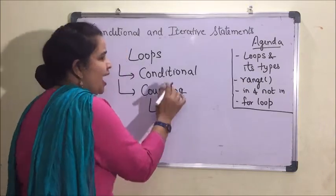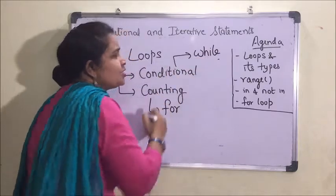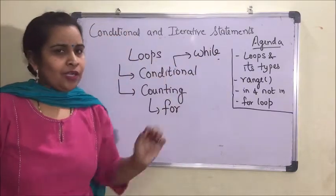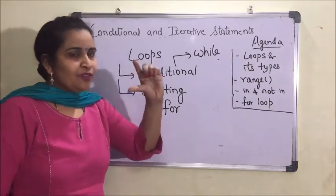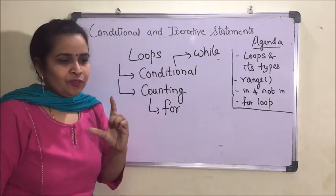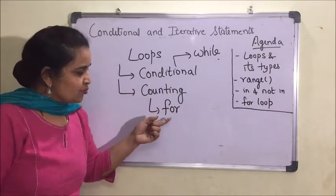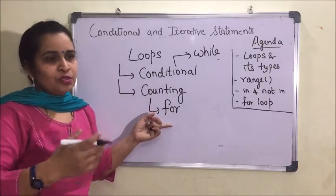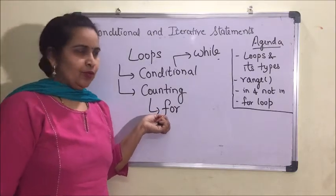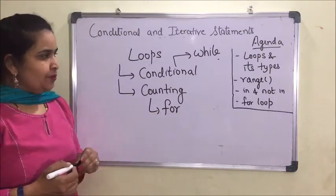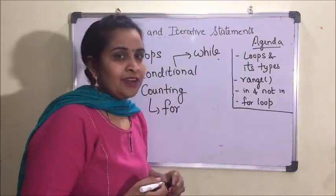The example of a counting loop is the for loop, and a conditional loop is the while loop. While is used when we are not aware of how many times the loop will get executed. For loop is used when we know how many times the loop will get executed. Before we start with for loop, I'll tell you what a range function is.